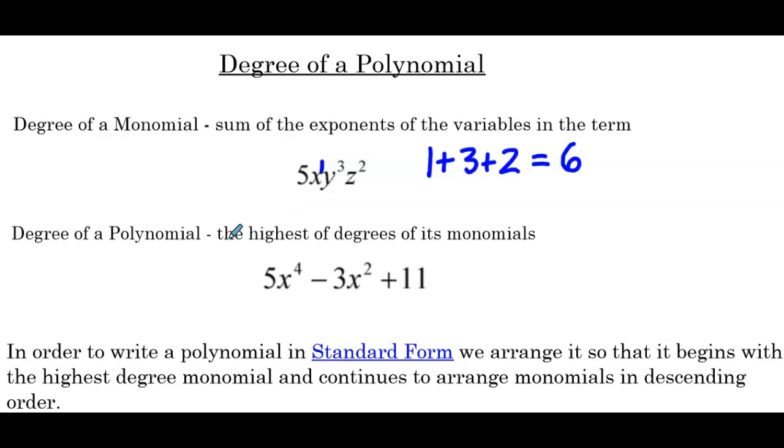Now building it to larger polynomials, the degree of a polynomial is the highest of degrees of its monomials. So if we look at each term individually, the one that has the highest degree will give us a degree of the whole polynomial. So for instance, we have 5x⁴ - 3x² + 11. Let's look at this first term as if it's a monomial. So 5x⁴. The degree here is going to be four. There's only a single variable. That variable is raised to the fourth power.